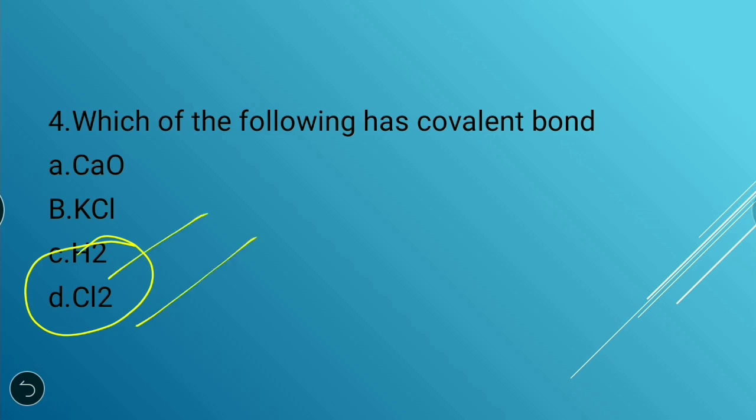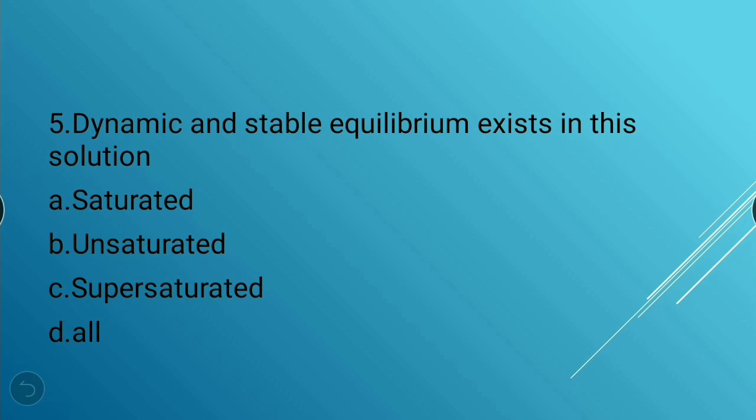Next question: Dynamic and stable equilibrium exists in which solution? Options: saturated, unsaturated, supersaturated, or all. The answer is saturated — dynamic and stable equilibrium exists in a saturated solution.